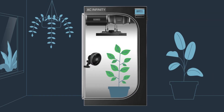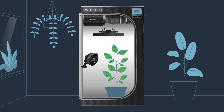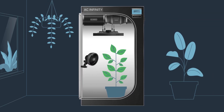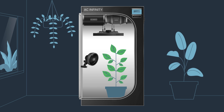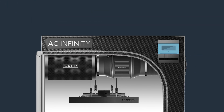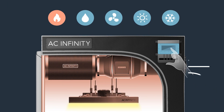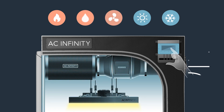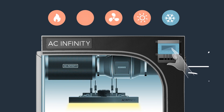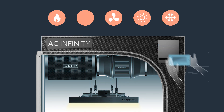To set up an indoor grow, your equipment must first be dialed in to reach the desired climate for optimal plant growth. This process often involves extensive trial and error with programming triggers and settings for each device, all in the hope that they function together effectively in response to changing environmental conditions.